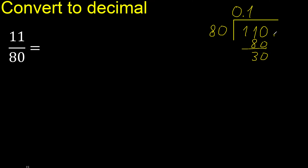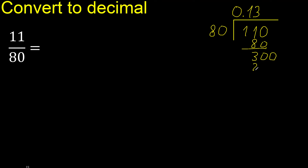There is no remainder number, therefore complete. 80 multiplied by which number? Multiplied by 4 is greater, multiplied by 3 is not greater — subtract. Always complete with 0.